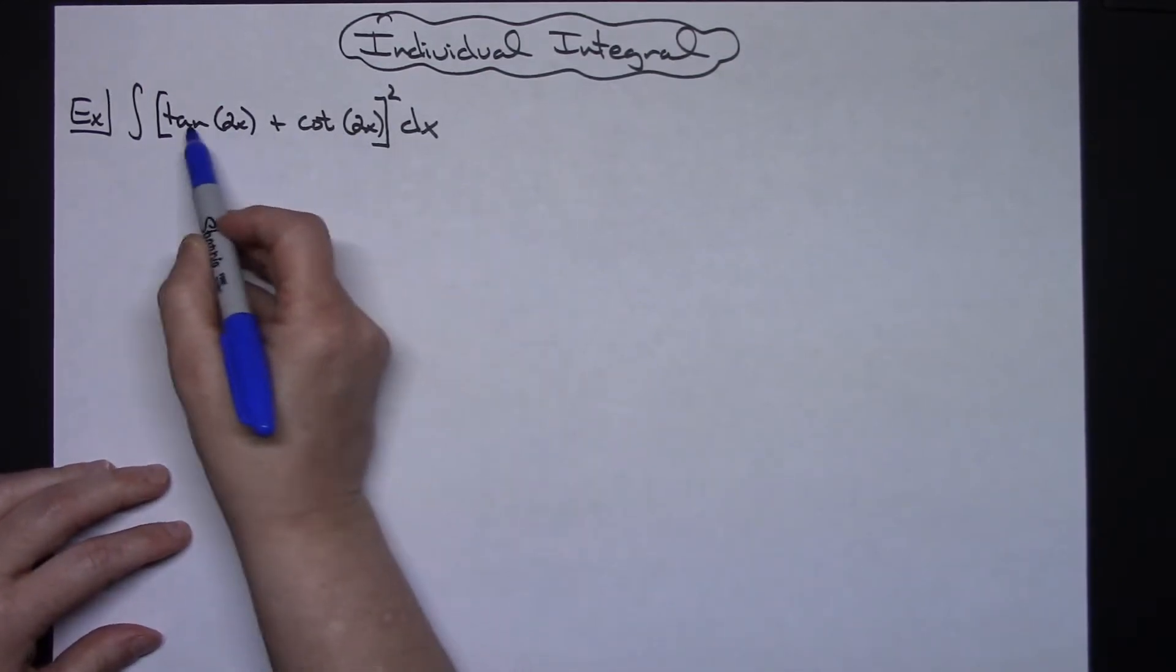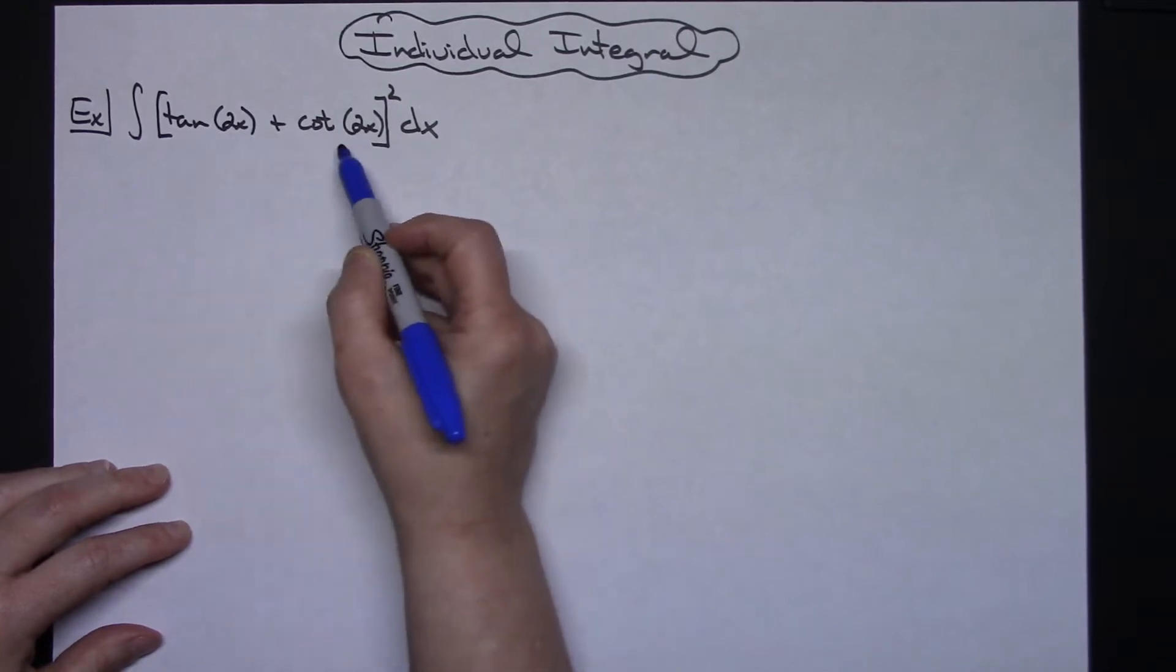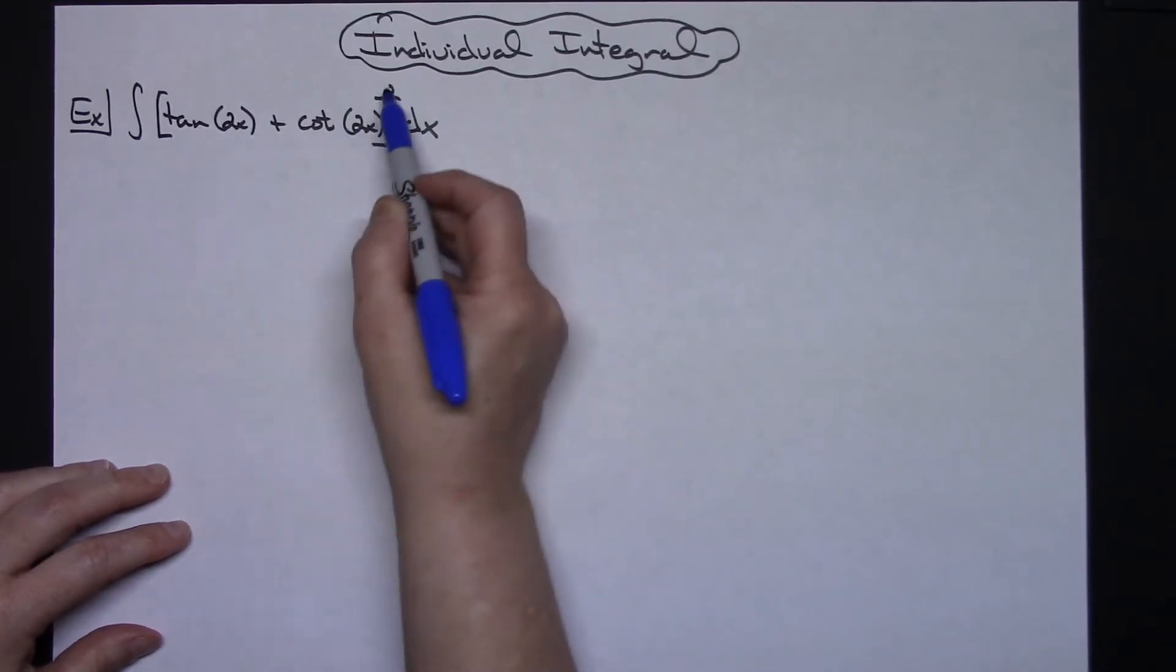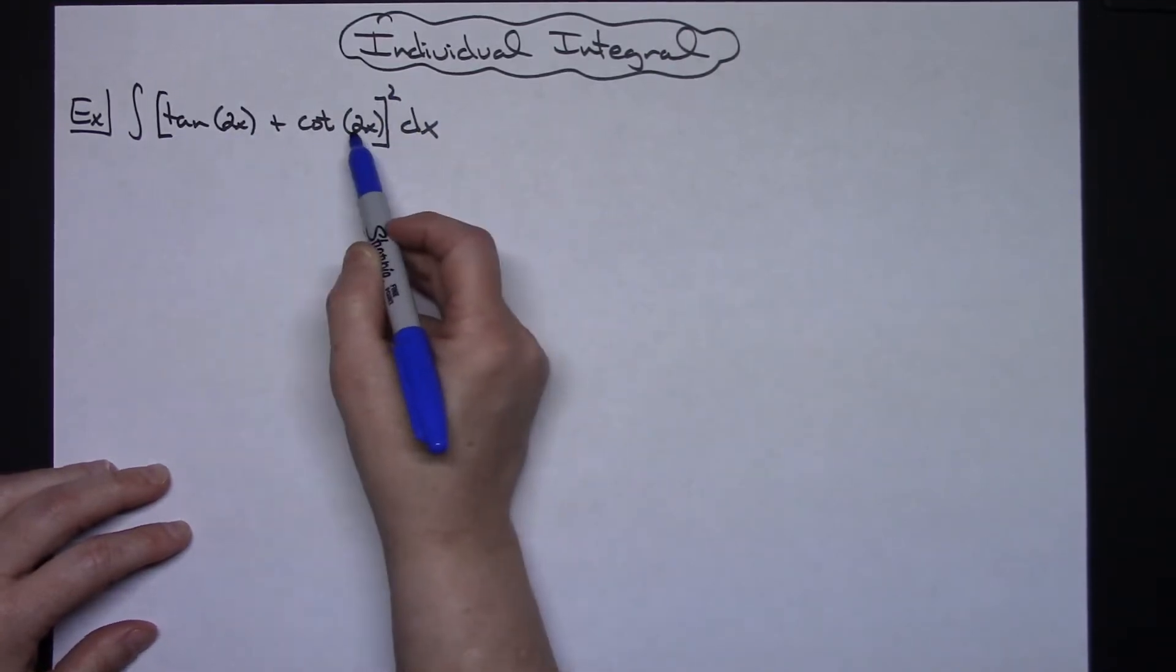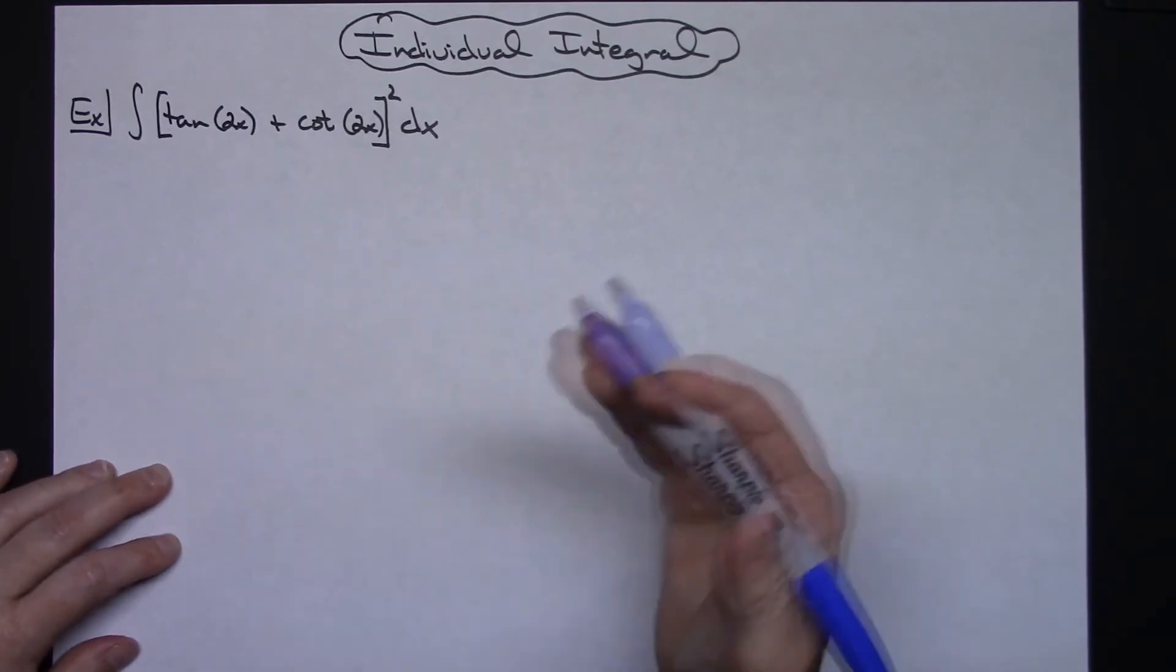Alright, since this is essentially a binomial quantity squared, I'm going to actually foil this quantity out and manipulate from there and then integrate.